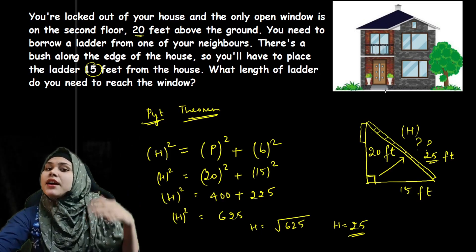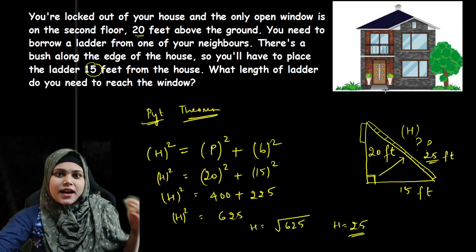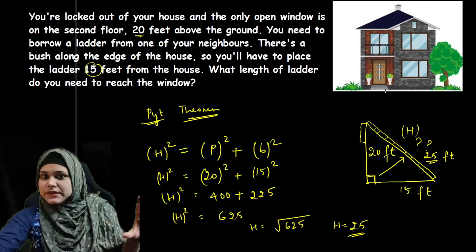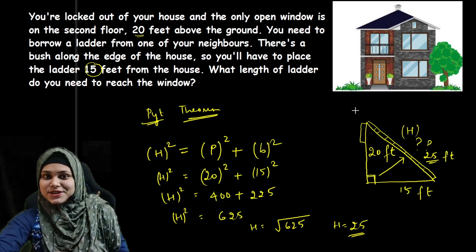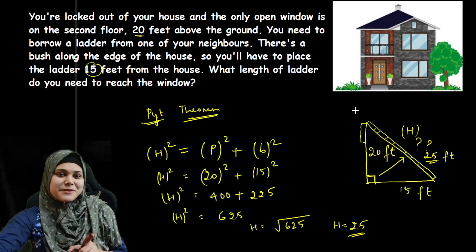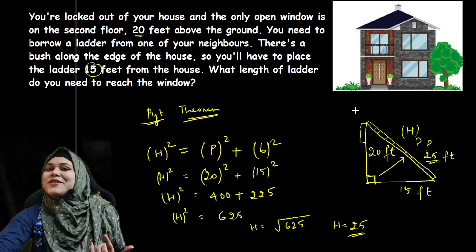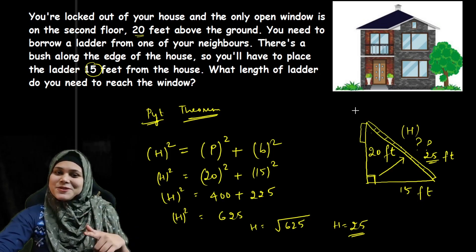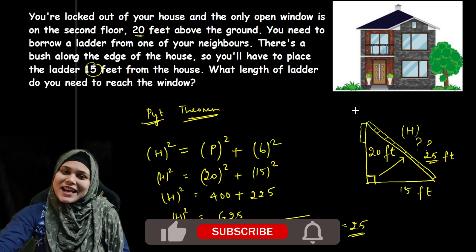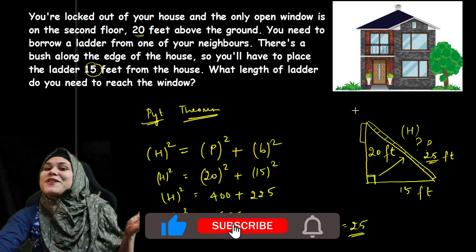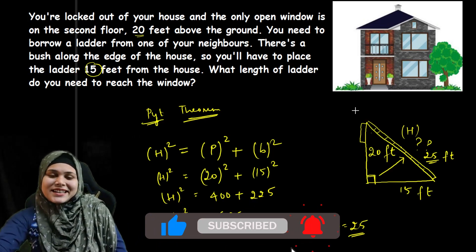So if the ladder is smaller than 25 feet, it will not be possible to reach the window. This was our question and its solution for today. I hope you understand. If you like this video, please subscribe to my channel and like this video. See you in the next video — thank you for watching, take care.